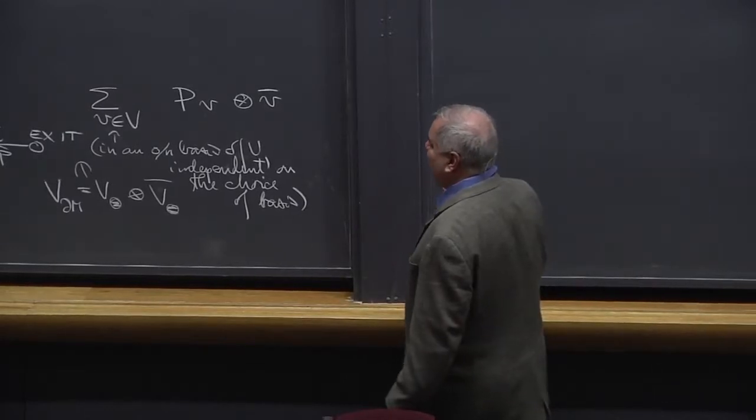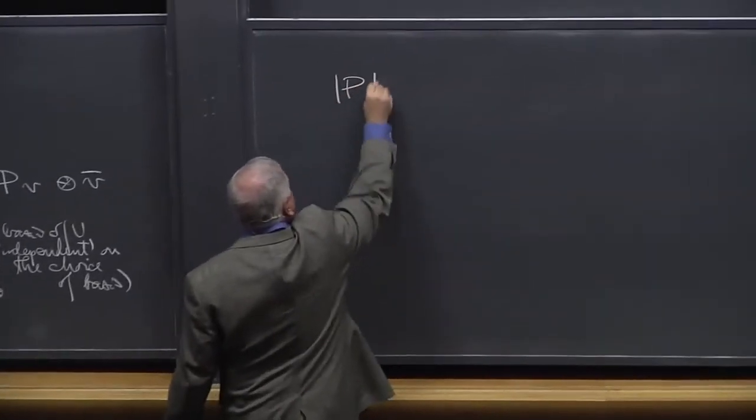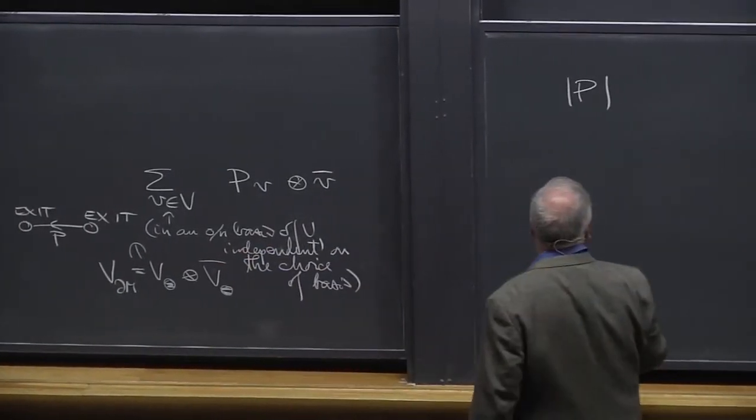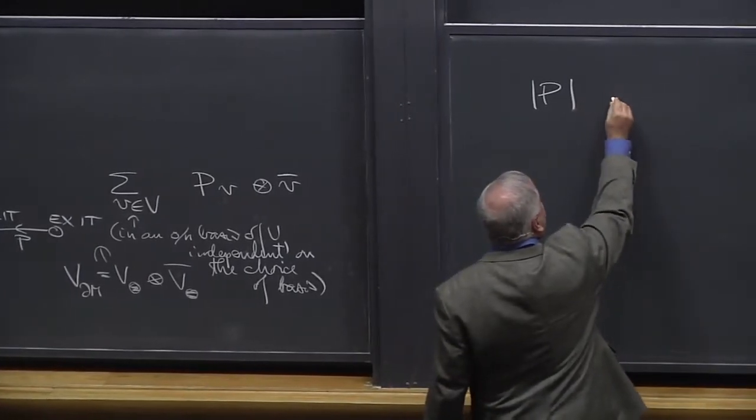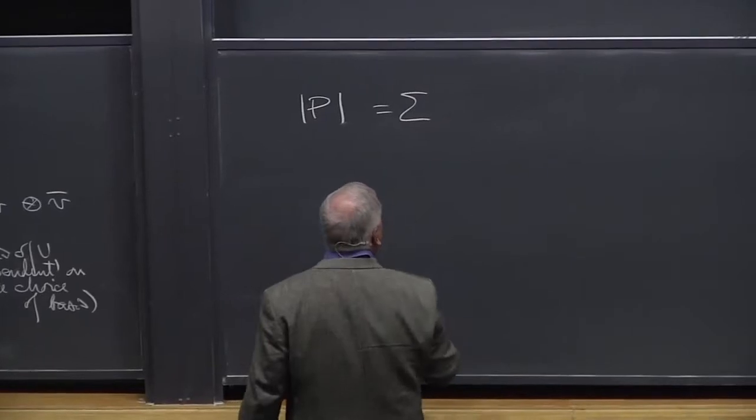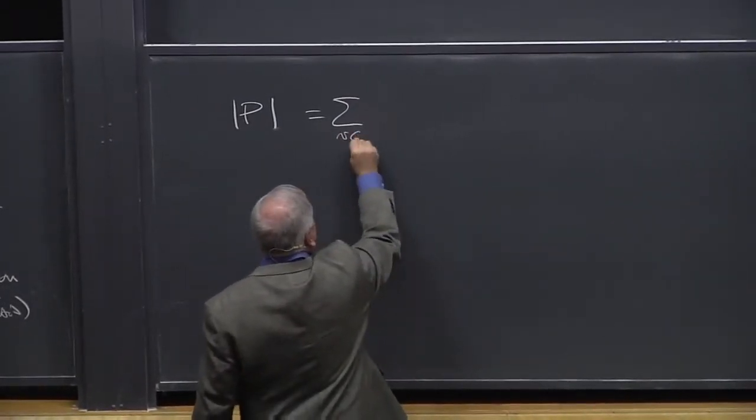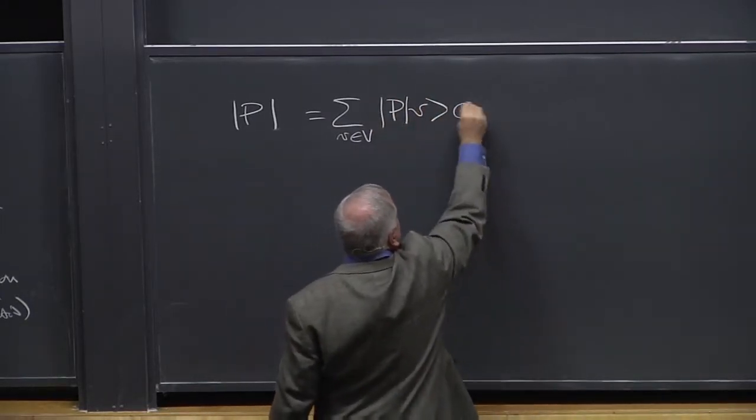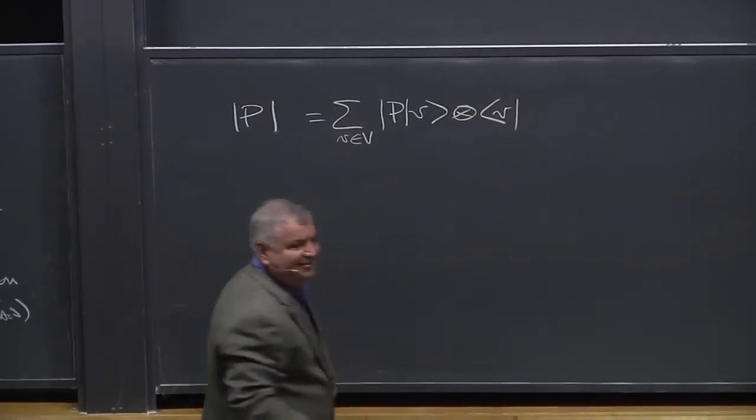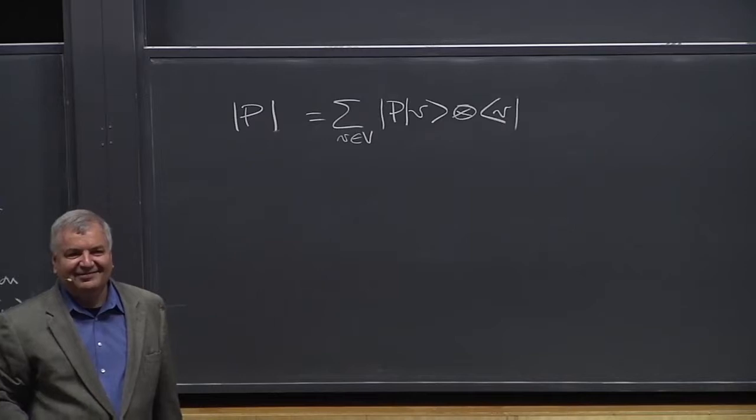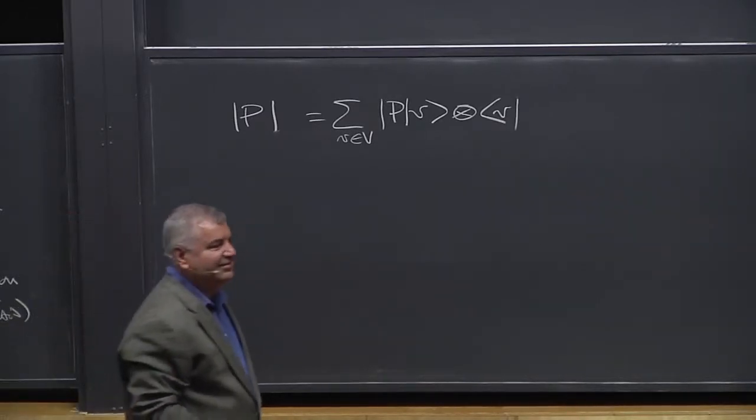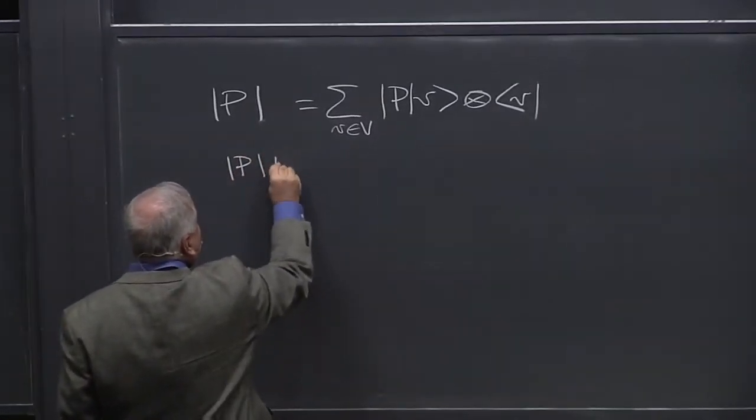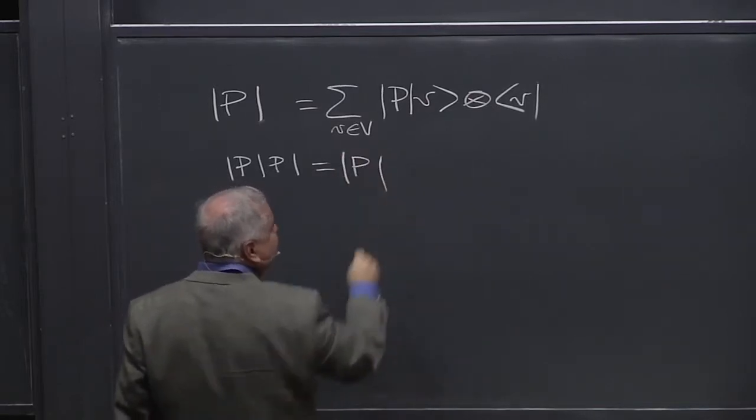Namely, what you have is an operator P, for instance. Let's translate the last one. Do you see this one? The operator P, and these are the bra and the kets. This is a sum of, over V in V, of PV times V. And, of course, P followed by P is P.